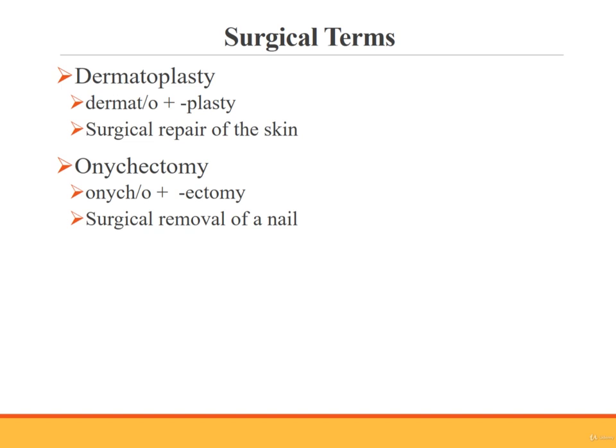Let's look at how some of the surgical terms are built. Dermatoplasty means surgical repair of skin — the combining form dermato means skin, and the suffix plasty means surgical repair. The combining vowel is retained because the suffix begins with a consonant. Onychectomy is the surgical removal of a nail — the combining form onycho means nail, and the suffix ectomy means surgical removal. The combining vowel is not used here because the suffix begins with a vowel.